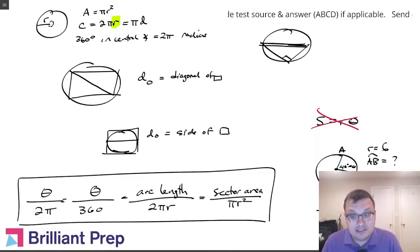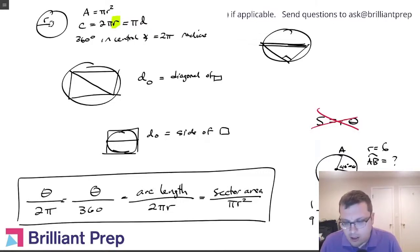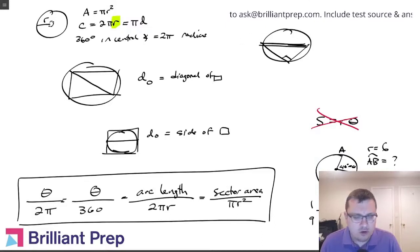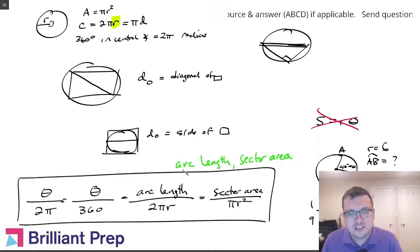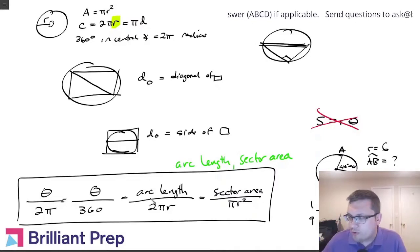Now I have something I can solve. Simplifying a little bit, it's 1 ninth. So cross-multiplying, 9x equals 12 pi, and x would be 12 pi over 9. You can reduce that and simplify, but that's your answer. This is a useful formula for arc length problems, sector area problems, anything involving central angles and fractions of circles.